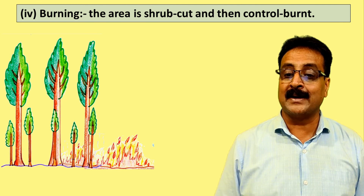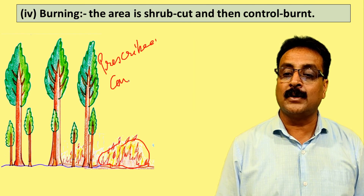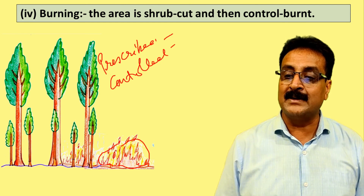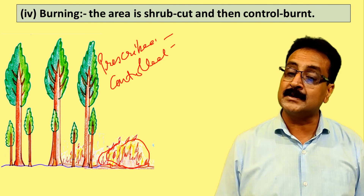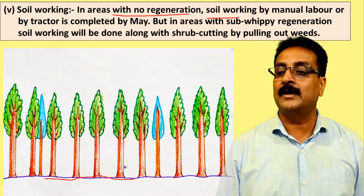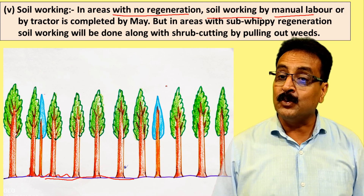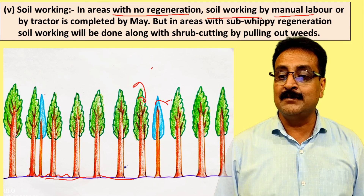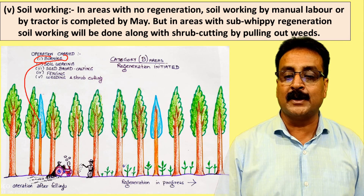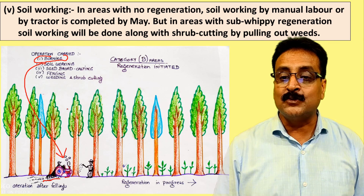The next operation is prescribed burning or controlled burning. All slash and debris are collected in one place where there is no regeneration, piled up, and burned. This is a very important operation - after burning we have a clean forest floor. In areas with no regeneration, soil working by manual labor or tractor is required. This must be done in May before the seed fall of Shorea robusta. The sequence is: burning first, then soil working, all before seed fall.